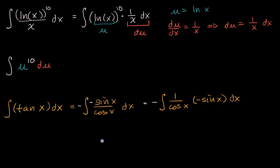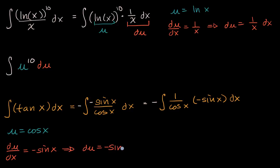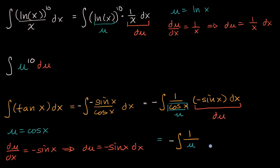Now does it jump out at you what our u might be? I have cosine of x in the denominator and its derivative right there, so let u equal cosine of x. Then du/dx equals negative sine of x, or du equals negative sine of x dx. Just like that, we have our du and our u, and the whole expression simplifies to the negative indefinite integral of one over u du — a much easier integral to evaluate. Then back substitute cosine of x for u.